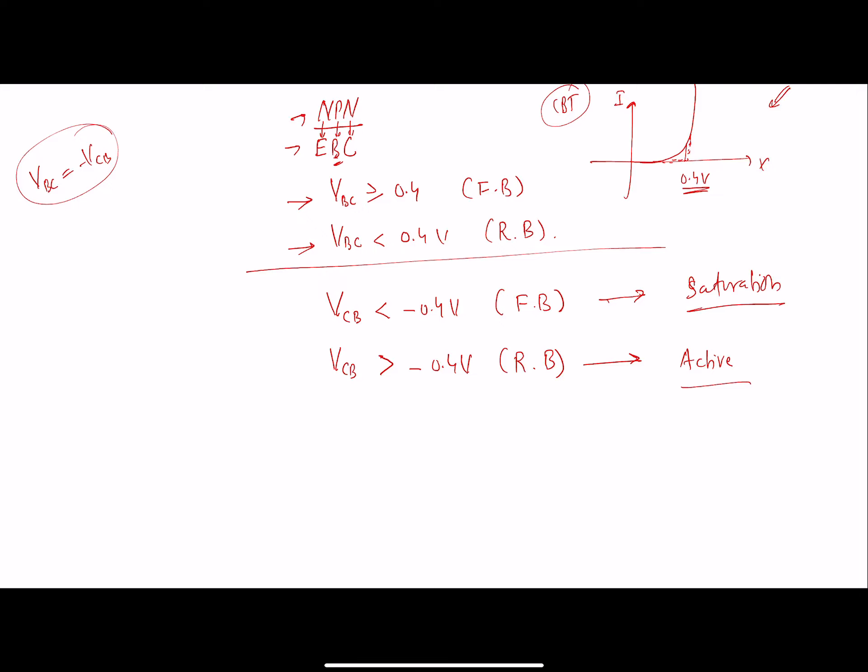Similarly, if we will just consider this equation where Vbc is minus Vcb, then we can come up with these equations. Our collector-to-base voltage, if less than minus 0.4 volts, will be forward biased. When the collector-to-base voltage is greater than minus 0.4 volts, it will be reverse biased. And these are the active and saturation modes of operation.